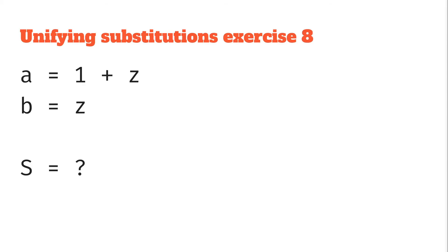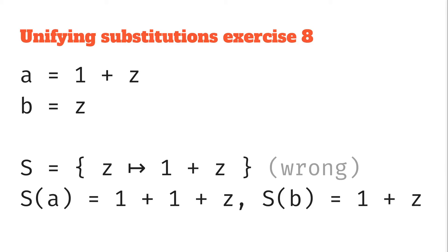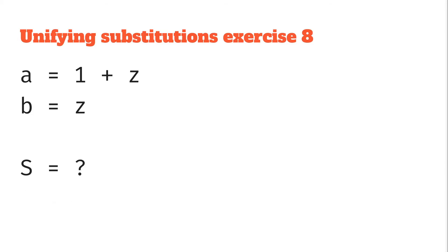So we can see a lot like previous things where we've had one thing is just a variable so we'll just set that to the other stuff. So we might do Z goes to 1 plus Z, this is wrong, and you'll see why. When we try to apply this substitution onto the two expressions we get different results. So on A we get 1 plus 1 plus Z, and on B we get 1 plus Z.